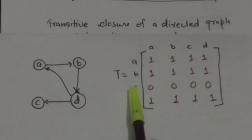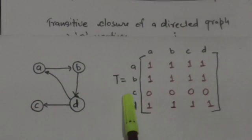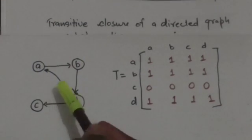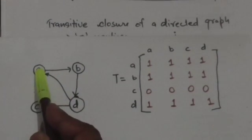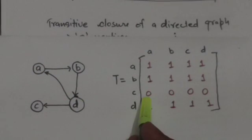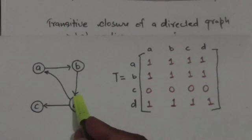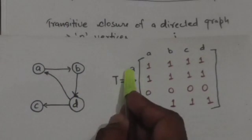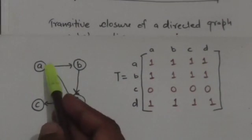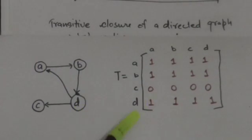Consider this directed graph. Matrix T is the transitive closure of this graph. In this graph there is a path from vertex A to vertex D, therefore in matrix T the element at the ath row and dth column is 1, because there is a path from vertex A to vertex D.